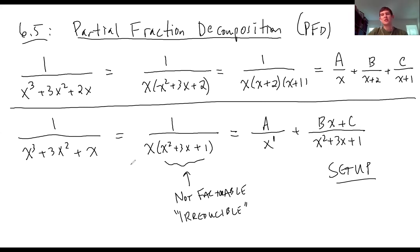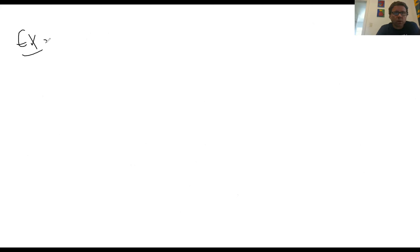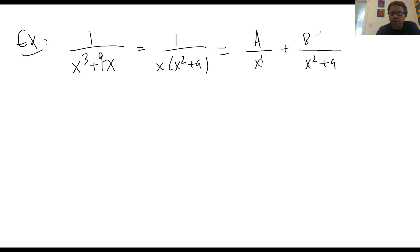What if the denominator has something like (x + a)² — a squared linear factor? Let's say x³ + x + 9. You could factor it as x(x² + 9), and x² + 9 is irreducible — it won't factor nicely over the reals. They each get their own fraction. Because x is degree 1, that gets A. Because x² + 9 is an irreducible square, that gets Bx + C.